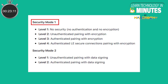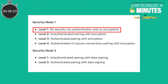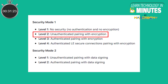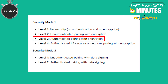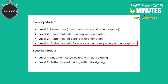Under Security Mode 1, there are 4 levels. Level 1 – No security, which means no authentication and no encryption. Level 2 – Unauthenticated pairing with encryption. Level 3 – Authenticated pairing with encryption. Level 4 – Authenticated LE secure connections pairing with encryption.